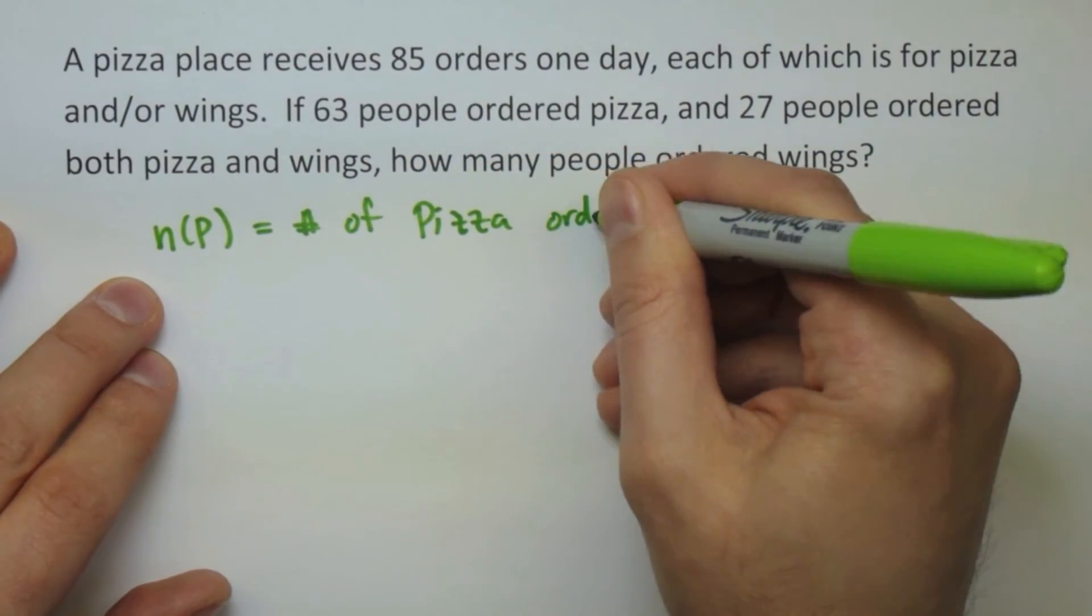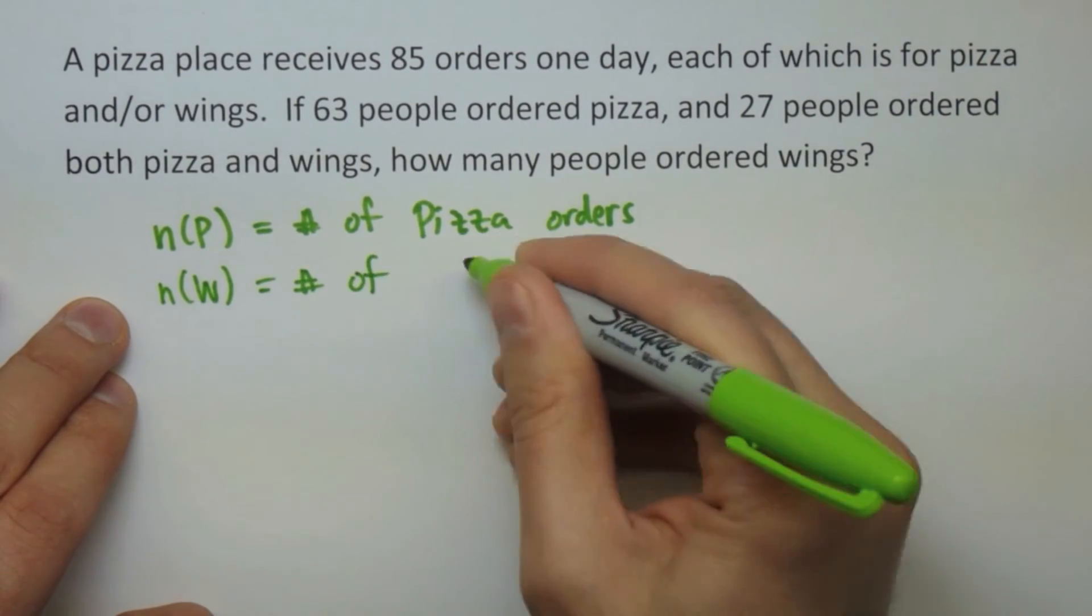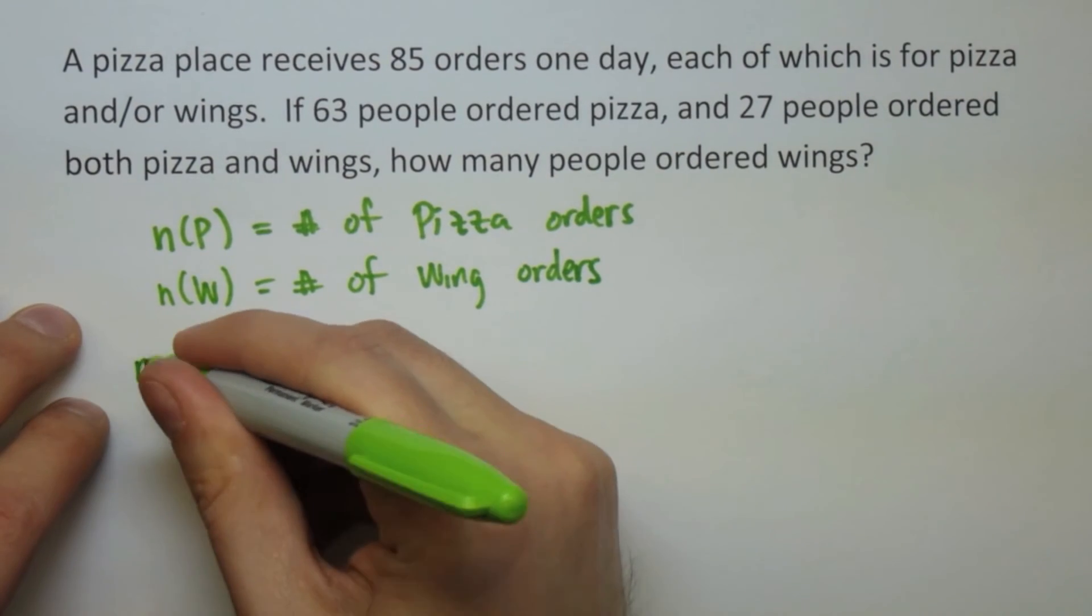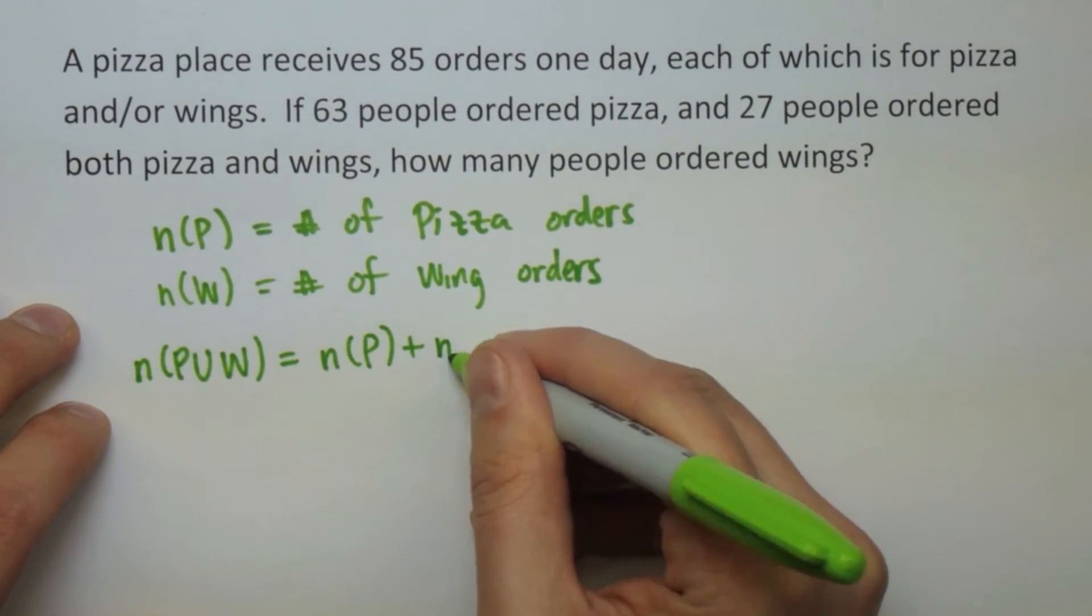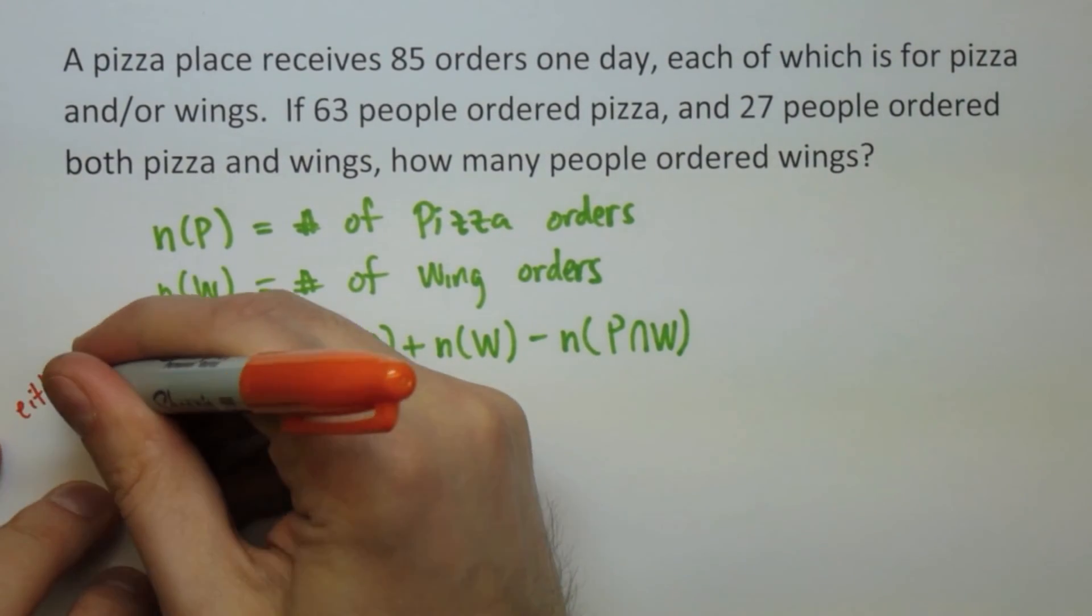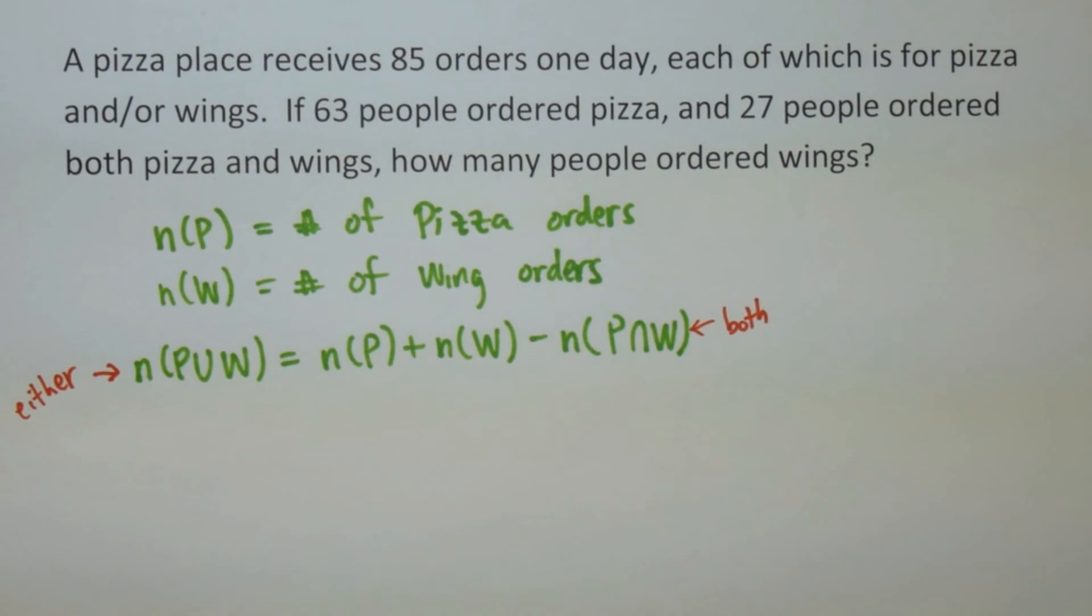And so if we let P be the set of people that ordered pizza, so N(P) will be the number of pizza orders, and W the set of people who ordered wings, so N(W) is the number of wing orders, then the law of inclusion-exclusion tells us that N of P union W is N(P) plus N(W) minus N of the intersection. The elements in the union are going to be the people that ordered either pizza or wings, and in the intersection will be the people that ordered both.